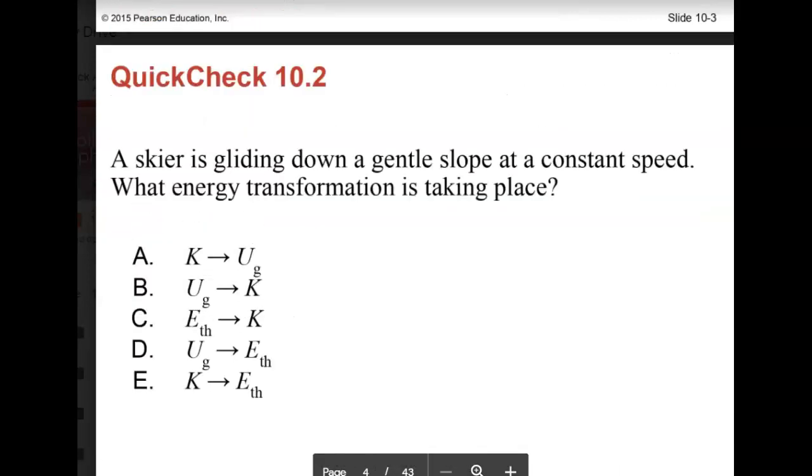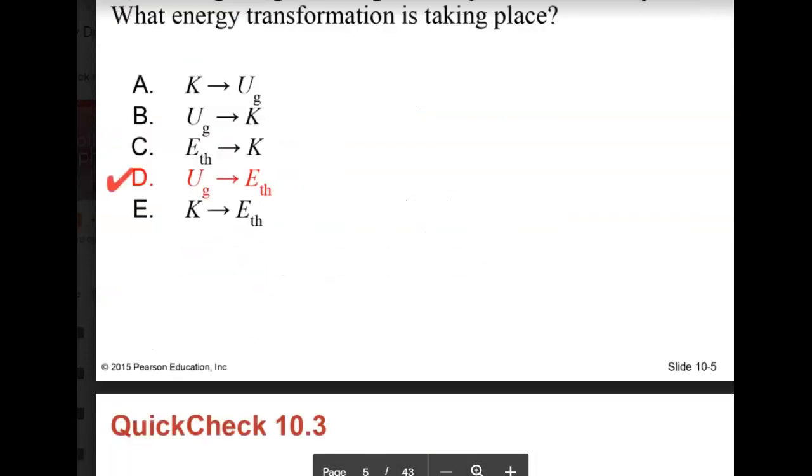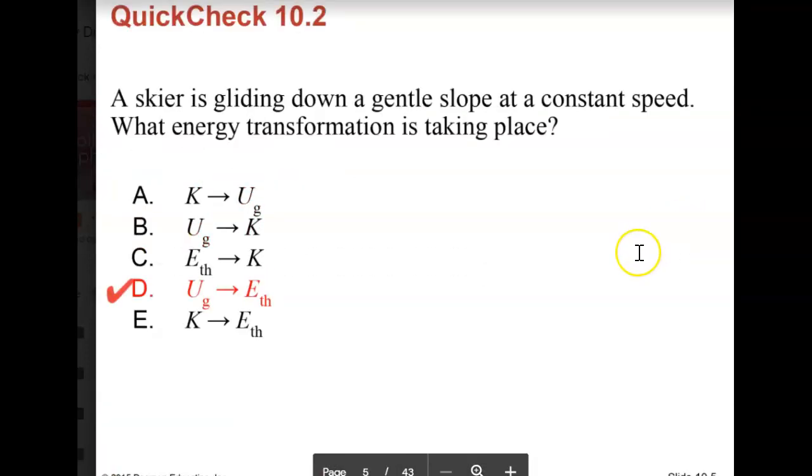Okay, a skier is gliding down a gentle slope at constant speed. What energy transformation is taking place? Well, potential energy is going into thermal energy. Why isn't this one here an option? Because it's constant speed.